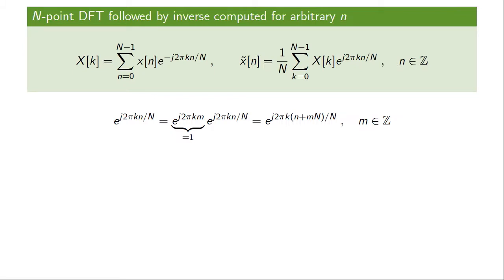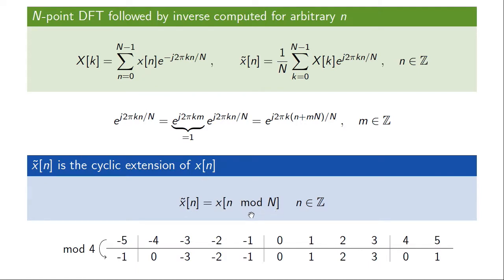This is part of a bigger result. If we look at the complex exponential in the inverse DFT, adding an integer multiple of capital N to the time variable n doesn't change the value of the exponential. This means x-tilde of n is a periodic function with period equal to N. Since x-tilde equals x(n) for n in 0 to N-1, x-tilde is the periodic extension of the sequence x(n), which we can write compactly as x(n mod N).